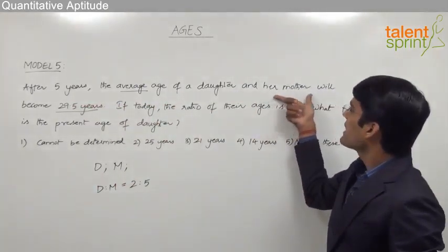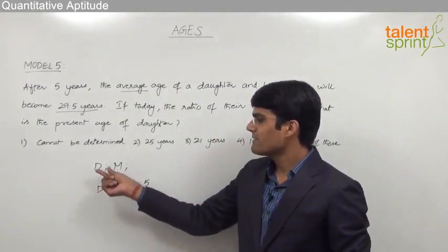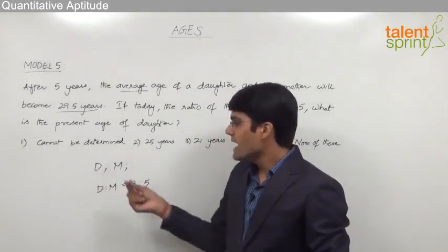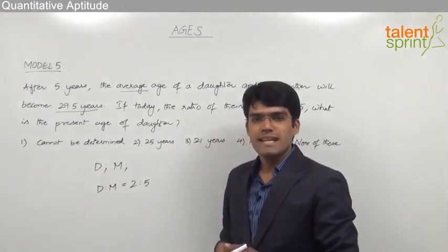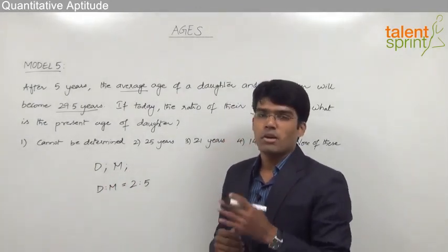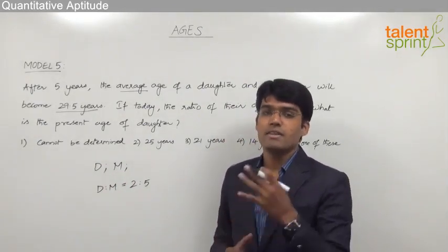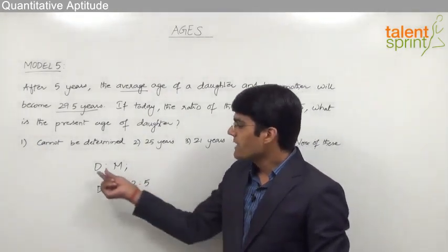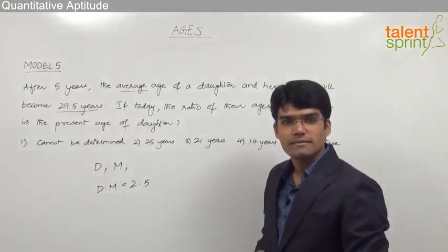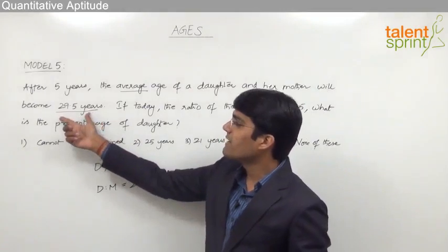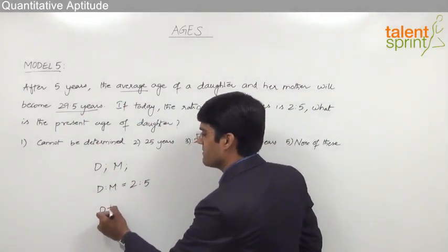After five years, if the present ages are d and m, then daughter's age will be d plus 5 and mother's age will be m plus 5. Both daughter's age and mother's age have increased by five years. From the concept of averages, we know that whenever each of the elements increases by 5, the average also increases by 5. So when both ages increased by 5, the average became 29.5.